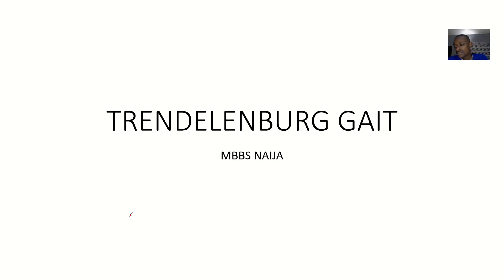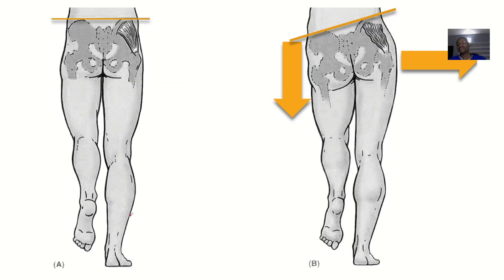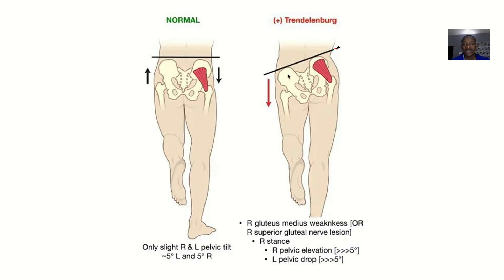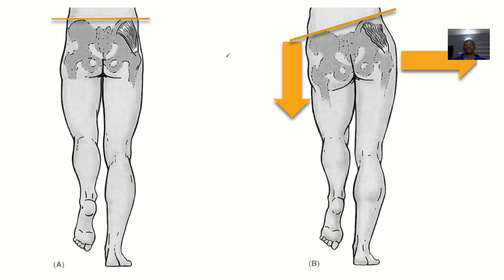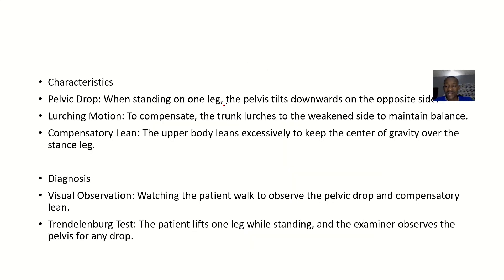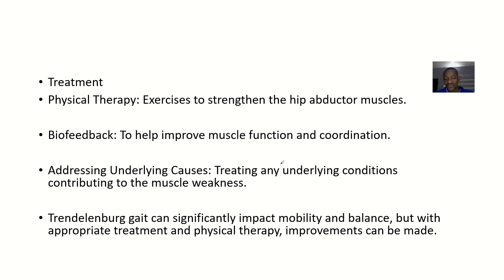Let's look at another type of gait known as the Trendelenburg gait. In anatomy we spoke about the Trendelenburg sign, and it's essentially the same thing. In the Trendelenburg sign, one hip is higher than the other — normally your hips should be at the same level. We'll look at the definition, causes, characteristics, diagnosis, and treatments for this type of gait.